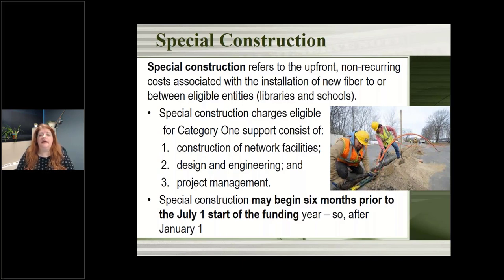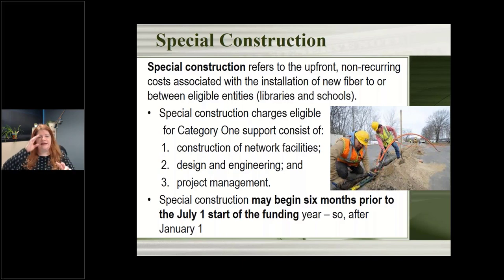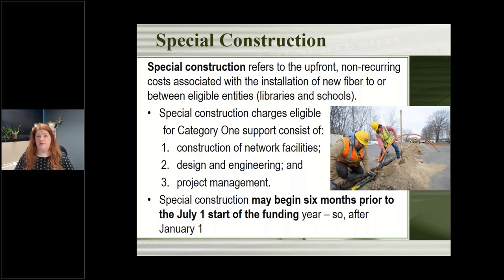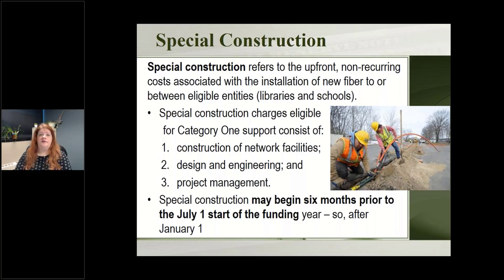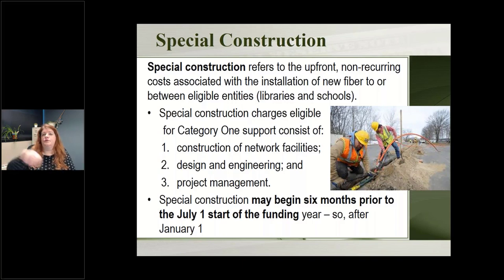USAC knows construction can't always be completed within a single funding year. This construction can actually happen anytime six months before a funding year begins — so going back to January of the year. For example, if you want fiber ready for July 1st, you can have construction done anytime between January and June. Even though it's outside the funding year, because it's related to receiving that fiber, you receive a discount on all that work and construction as well.